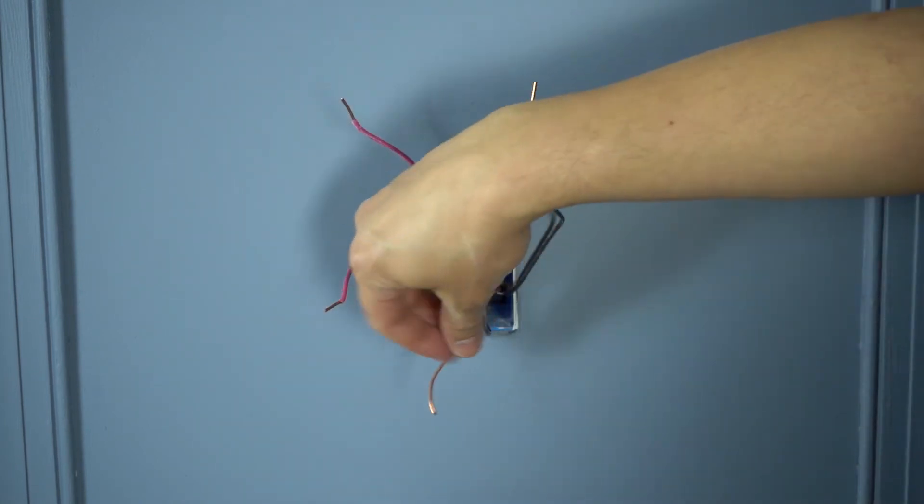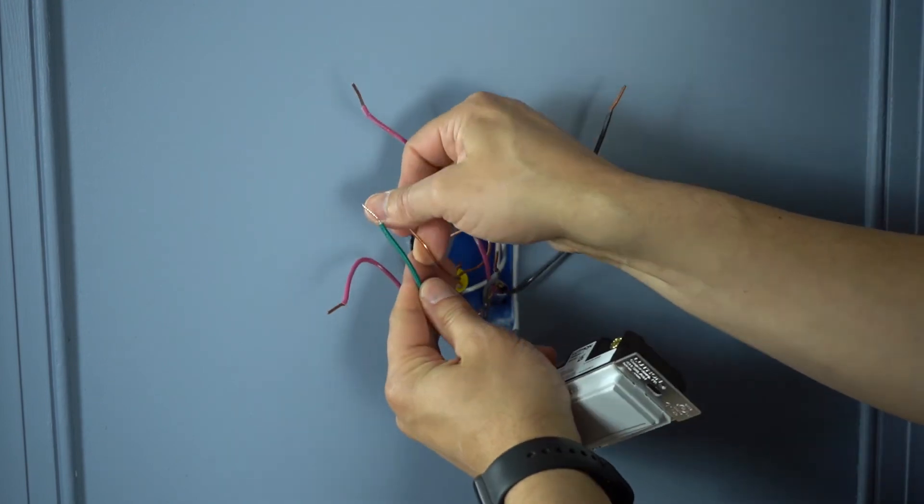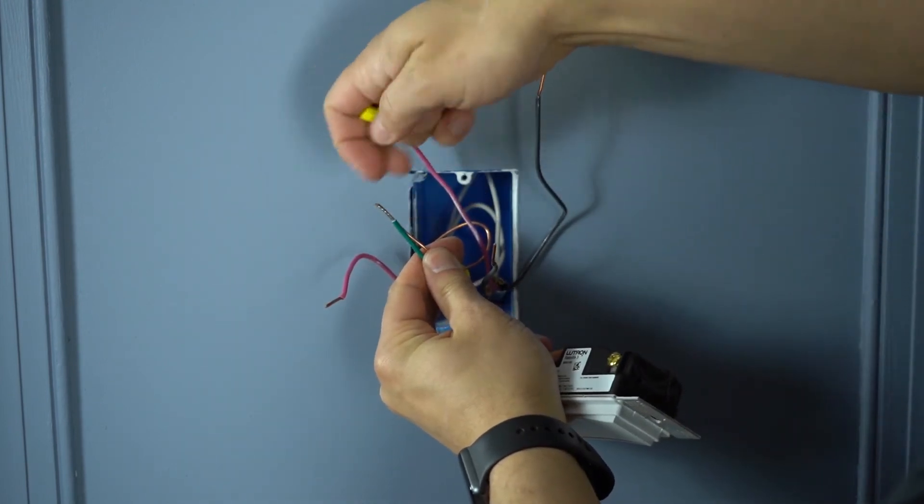Now that our switch is removed, we're going to take the ground wire and tie it to the green wire on our companion dimmer.